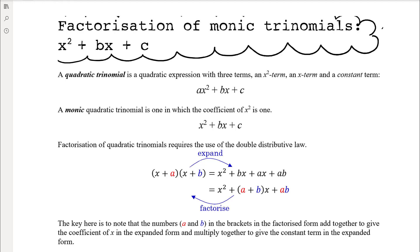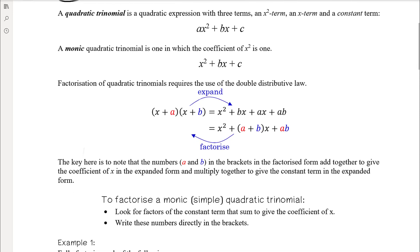In this video we want to begin to look at factorising quadratic trinomials — that is a quadratic expression with three terms: an x squared term, an x term, and a constant term. We're going to look at factorisation of monic trinomials, where we have one x squared — not negative x squared, certainly not 2x squared. This factorisation process is much simpler; things become a lot more complicated once we have something other than one in front of the x squared term.